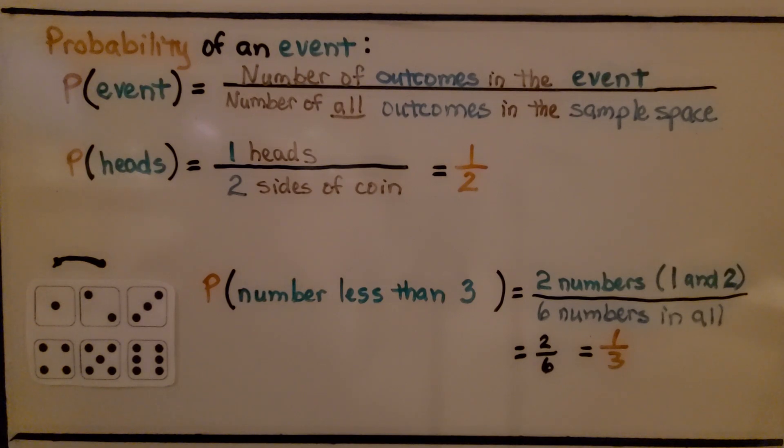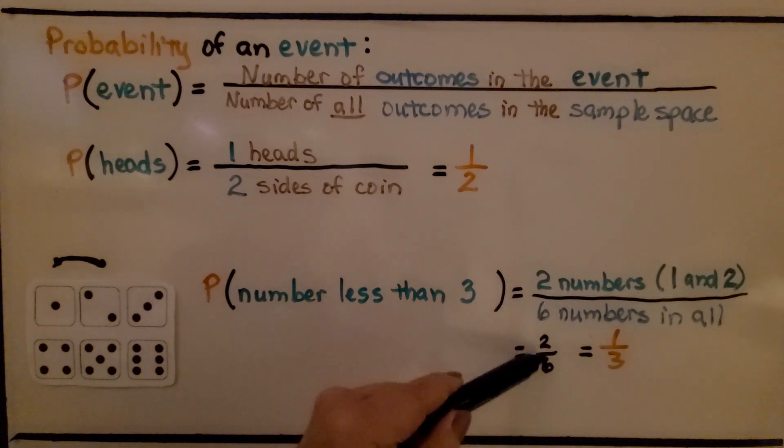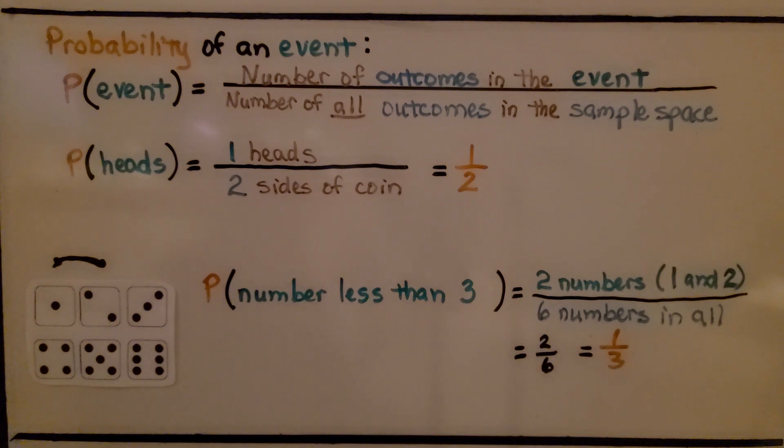There's only two numbers, 1 and 2, but there's six numbers in all. So the probability of rolling a number less than 3 would be 2/6. We can reduce it to 1/3.